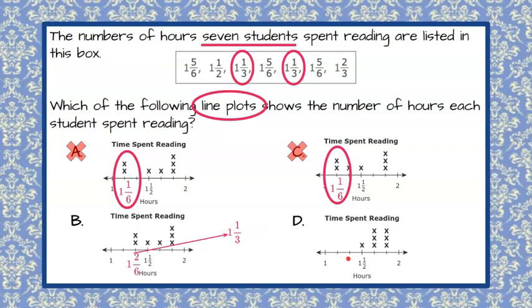One and one-third would be here: one and one-sixth, one and two-sixths, so it simplifies to one and one-third, but there's no data here. Therefore, line plot D cannot be the answer.